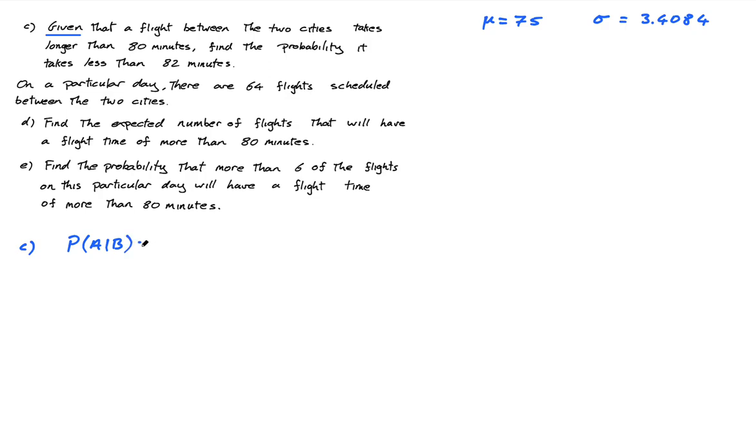So the probability of A given B is the probability of A and B divided by the probability of B. This formula is in the formula booklet. The probability that T is less than 82 given that T is greater than 80 means T has to be less than 82 and bigger than 80, which I can write as T is bigger than 80 and less than 82, divided by the probability that T is greater than 80.